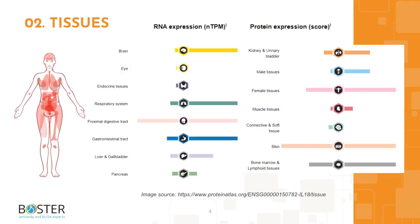Topic 2: Where is IL-18 expressed? IL-18 is primarily expressed by dendritic cells, neutrophils, monocytes, macrophages, and epithelial cells. It is also constitutively expressed within the cytoplasm and nucleus of a variety of hematopoietic cells, non-hematopoietic cells, and keratinocytes.